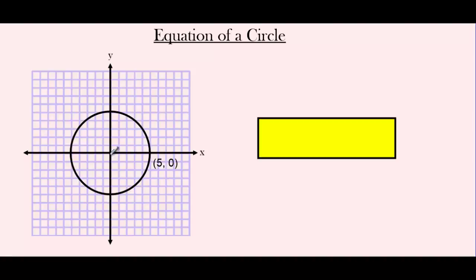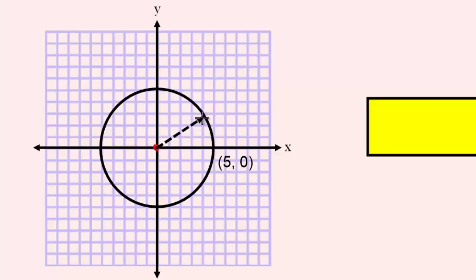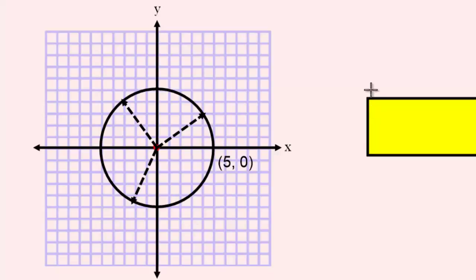Unlike any other shape, circles are unique in that the distance from the center of the circle to any other point on the circle is the same. We call these line segments the radius. No matter which direction we put a radius — to that side, that side, or even down this way — the radius is the same length. That radius is what defines the circle, and its size differentiates one circle from the next.